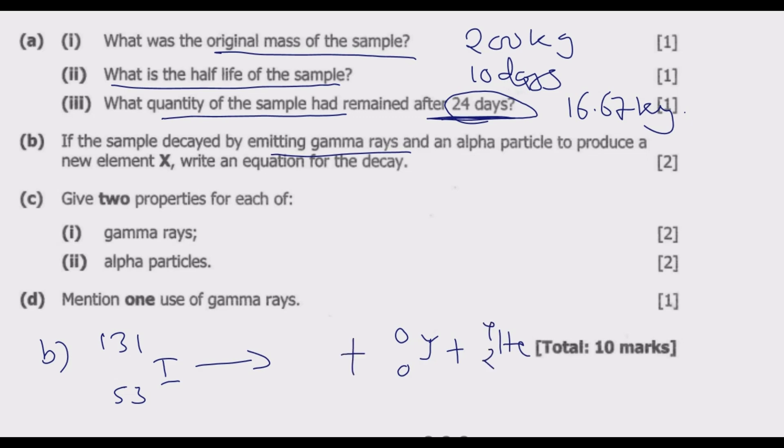Then what remains is the new element X. From 131 we subtract 4 and 0, which is 127. From 53 we subtract 0 and 2, ending up with 51. Then plus the energy which is released during the decay process. This is the decay equation.